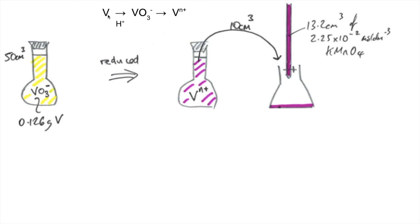Now the important thing here is the moles of V there are going to be the same as the moles of VO3 minus there, which are going to be the same as the moles of the Vn plus there. So all the moles here, here, and here are the same.